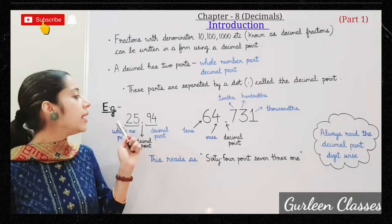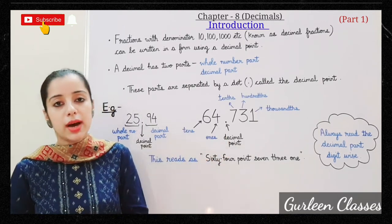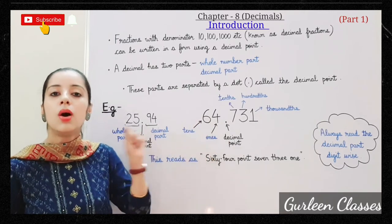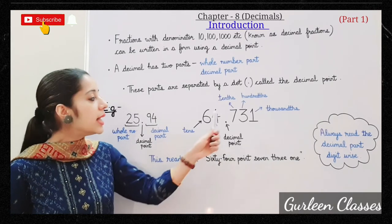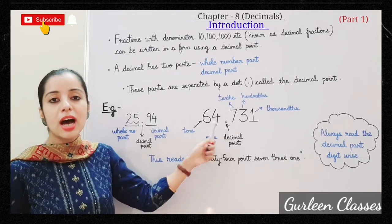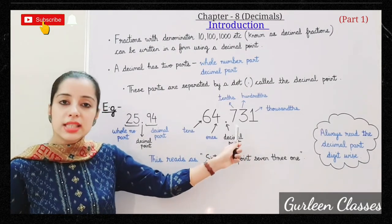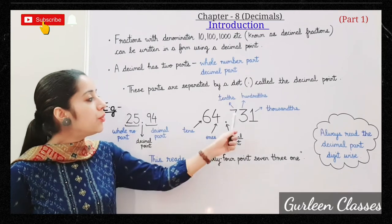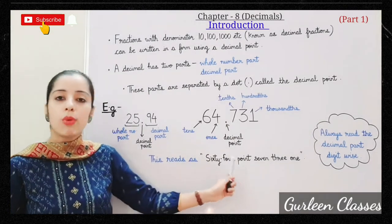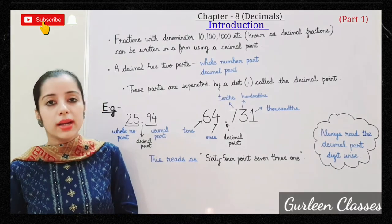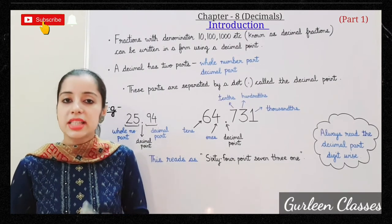Another example: 64.731. The left side of the decimal point, 64, is the whole number part, and 731 is the decimal part. Keep in mind: on the left side of the decimal point, 4 is in the ones place and 6 is in the tens place. On the right side, 7 is in the tenths place, 3 is in the hundredths place, and 1 is in the thousandths place. Always read the decimal part digit by digit.